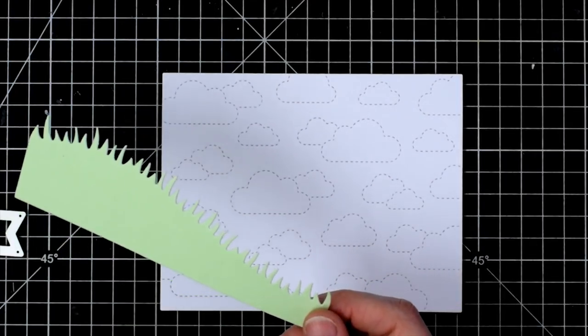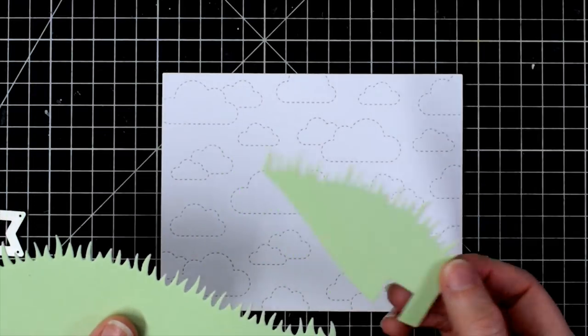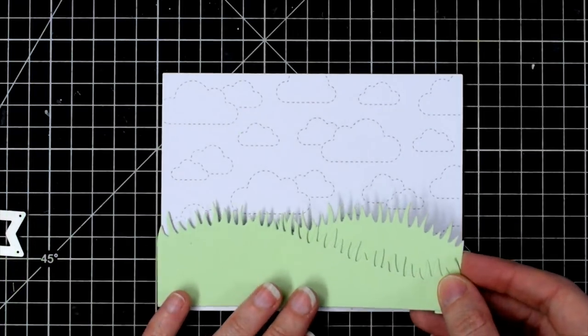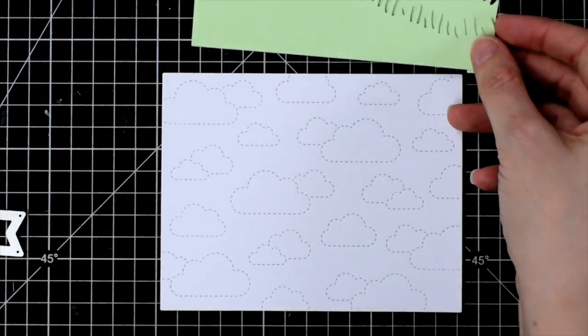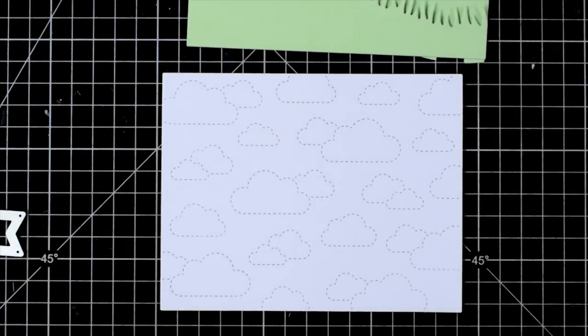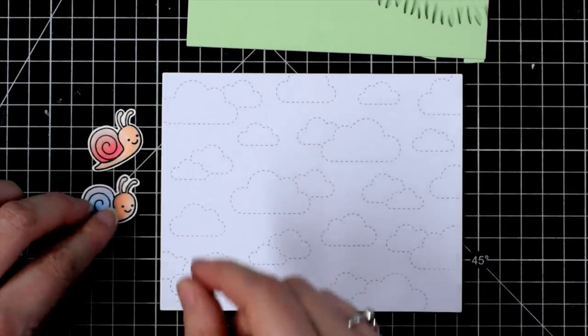I first of all got the Lawn Fawn Stitched Cloud Backdrop and I've also used some sort of a minty pastel green color cardstock to cut out two grassy hills which is from the Lawn Fawn grassy hillside pop-up die.